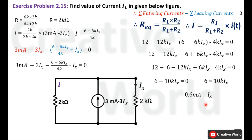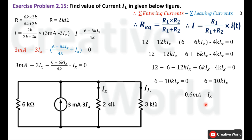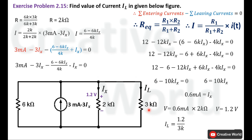Now that we have calculated the value of ix, we go back to the previous circuit where three resistances are connected in parallel. We can calculate the voltage across the 2 kΩ resistance: 0.6 mA × 2 kΩ = 1.2 V. So 1.2 V appears across this 2 kΩ resistance — current entering terminal is positive and current leaving terminal is negative. Because of the parallel connection, the same 1.2 V appears across the 3 kΩ resistance. We can now calculate iL using Ohm's Law (i = V/R): iL = 1.2 V / 3 kΩ = 0.4 mA.